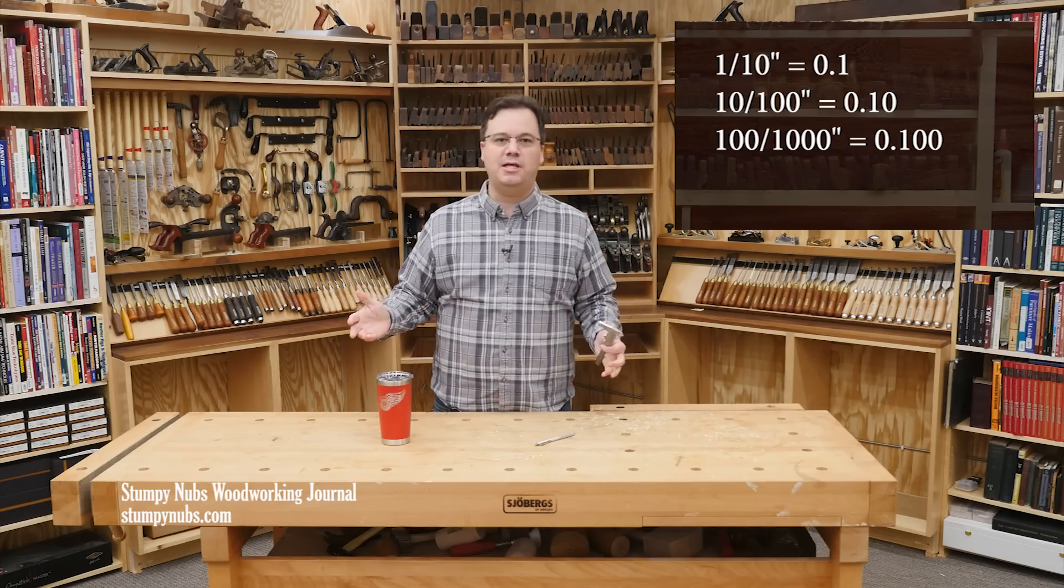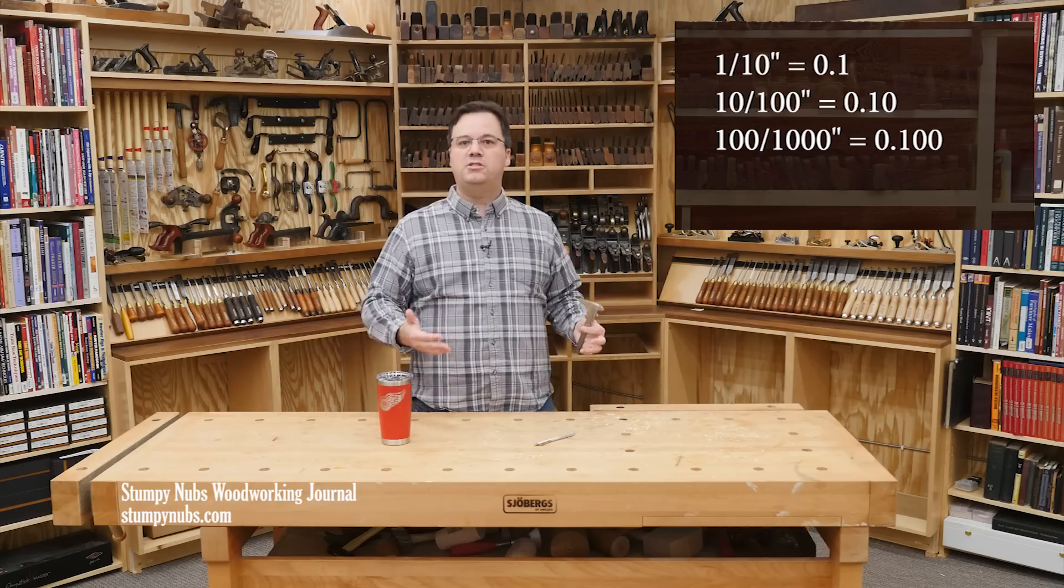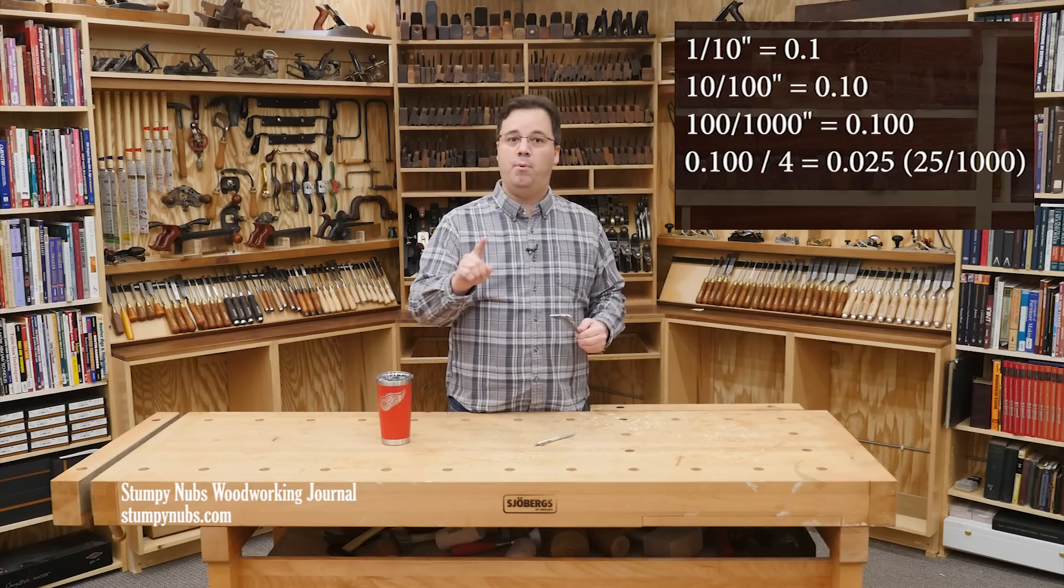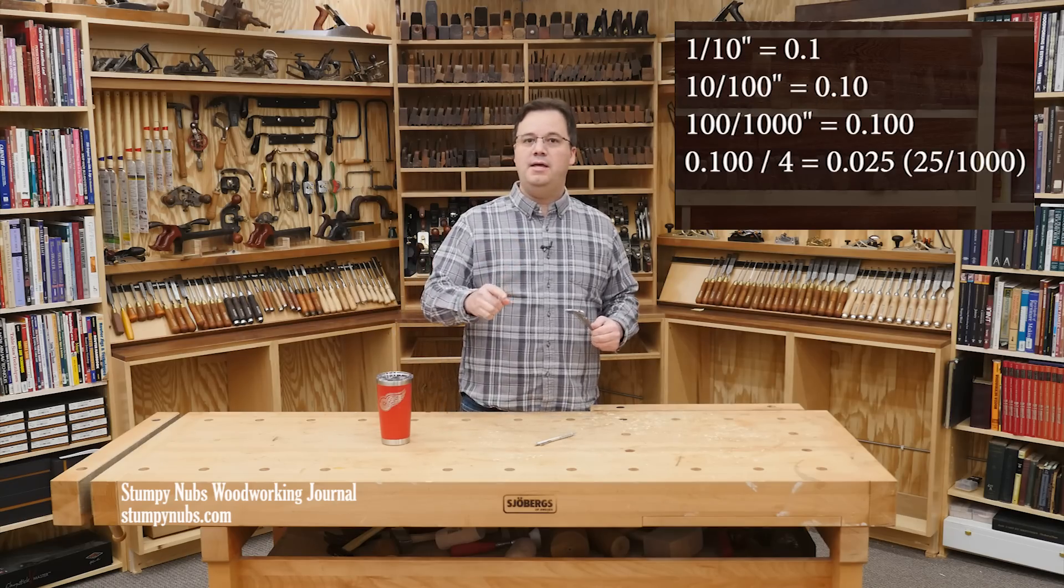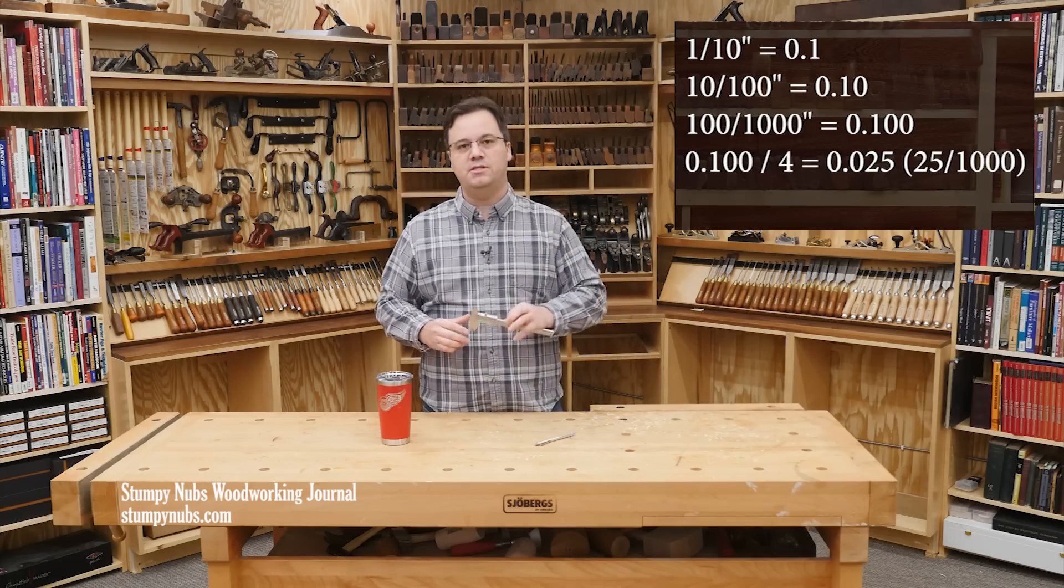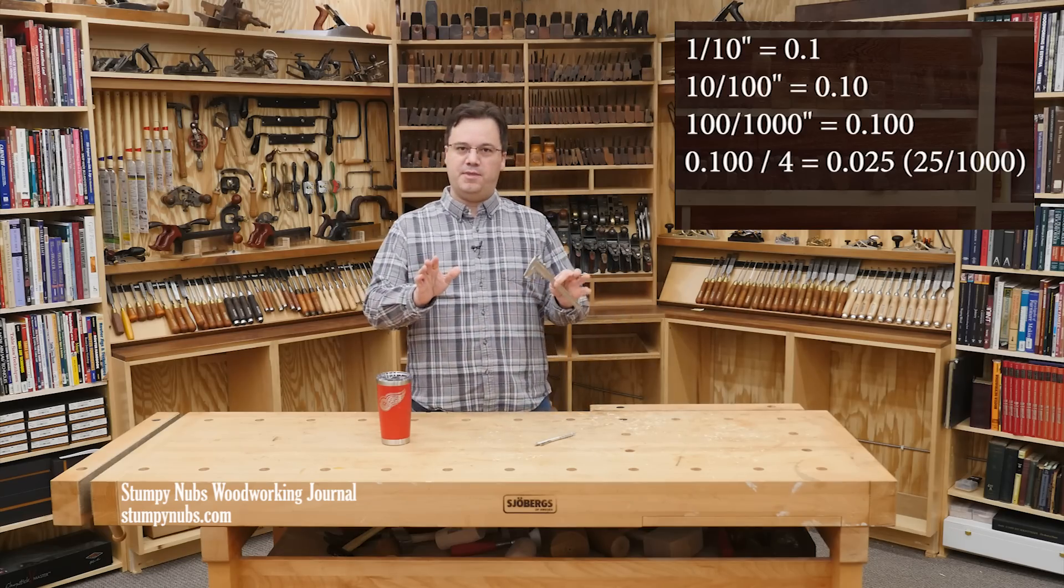Now why would you want to add zeros like that? Because it can be difficult to divide point one, for example, by four, but point one-zero-zero is easily divided by four to get point zero-two-five, or twenty-five thousandths of an inch. Stick with me, this gets easier.